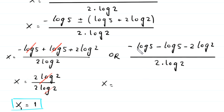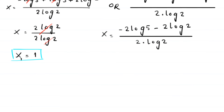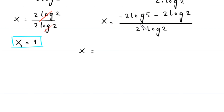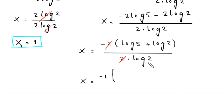For the negative case, x equals negative log of 5 minus log of 5 minus 2 times log of 2, divided by 2 times log of 2. The numerator gives negative 2 times log of 5 minus 2 times log of 2. We factor out negative 2, giving negative 2 times log of 5 plus log of 2, divided by 2 times log of 2. The 2s cancel, leaving x equals negative 1 times log of 5 plus log of 2, which equals negative log of 5 times 2.